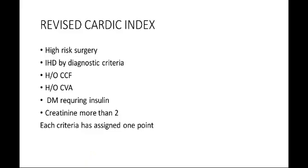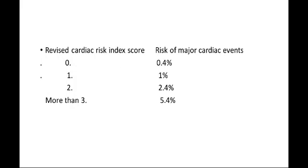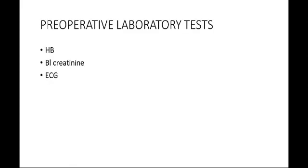Sixth, creatinine more than two. Each criterion has one point assigned. The revised cardiac risk index score and risk of major cardiac events: when score is 0, the risk is 0.4%; when score is 1, the risk is 1%; when score is 2, the risk is 2.4%; and when score is more than or equal to 3, the risk of major cardiac events will be 5.4%.